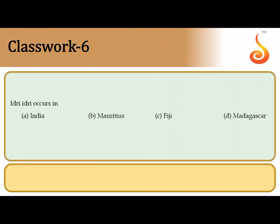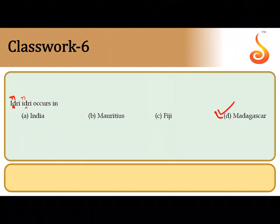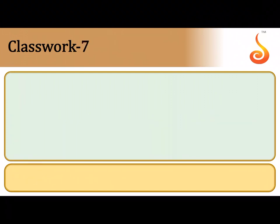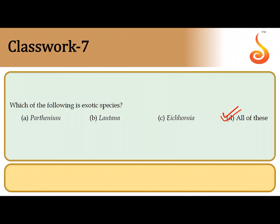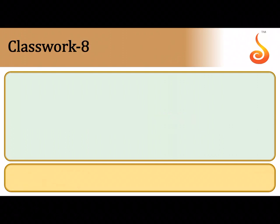Indri indri is the largest lemur — the giant lemur of Madagascar — so option D is correct. The seventh question asks which is an alien or exotic species. Parthenium hysterophorus (carrot grass), Lantana camara, Eichhornia crassipes (water hyacinth) — all were accidentally introduced into our country and do not originally belong here. Today they have overtaken the local population and pose a threat to local species, making them one of the causes of biodiversity loss through alien species invasion. The correct answer is option D.